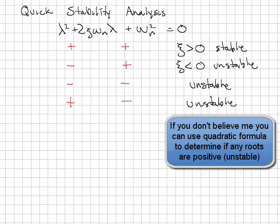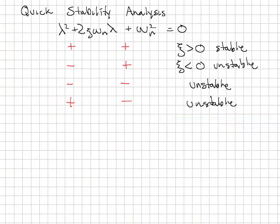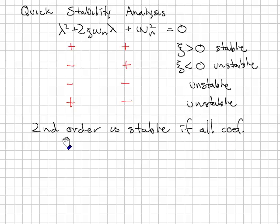So for a second order system, we can only have a stable system if both of the signs are positive. Or we could write: second order system is stable if all coefficients have the same sign.